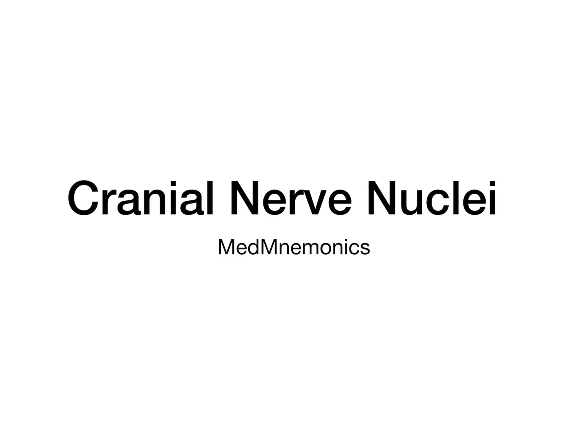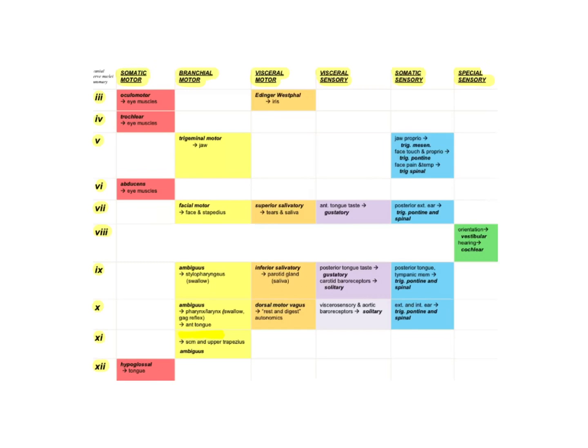Welcome to the cranial nerve nuclei mnemonic video. If you've seen a table like this in your lecture and wondered how you're going to ever remember the different modalities of each of the cranial nerve nuclei, look no further. Please note that cranial nerves 1 and 2 do not have any nuclei in the brainstem, so we only have cranial nuclei 3 through 12.